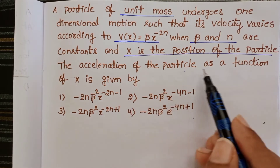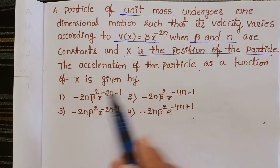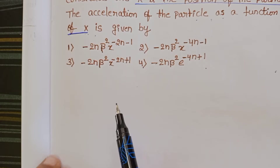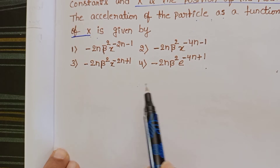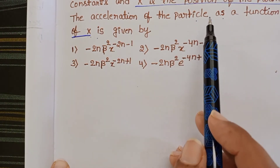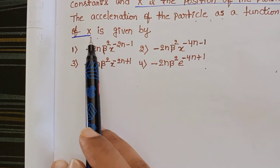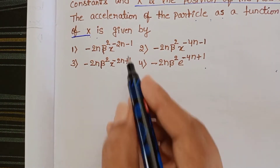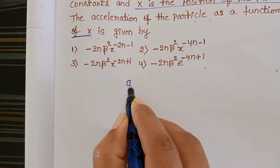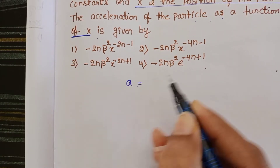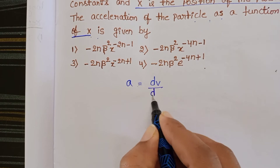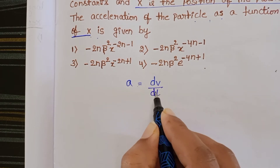We want to find the acceleration of the particle as a function of x. Acceleration is the rate of change of velocity: a = dv/dt.